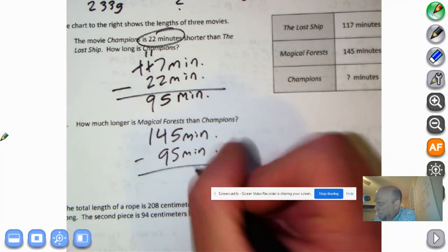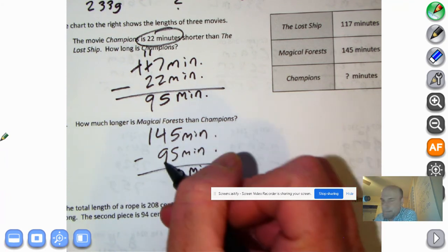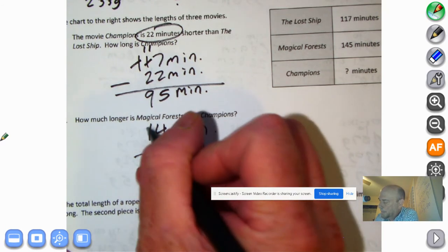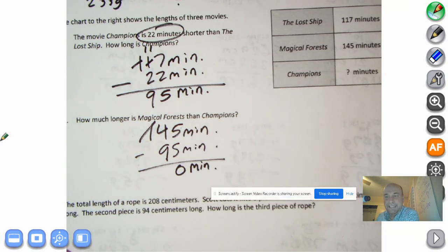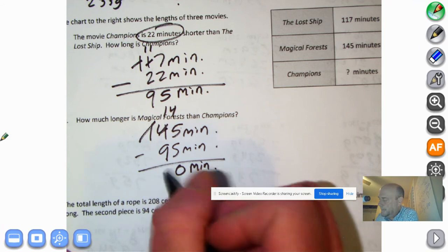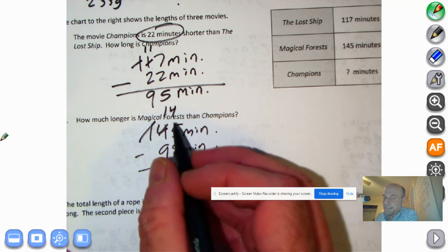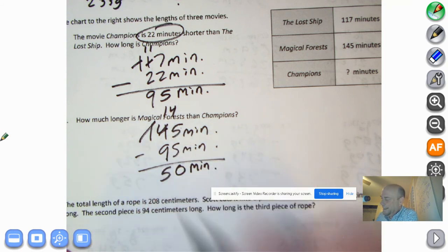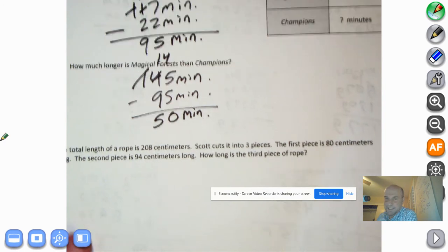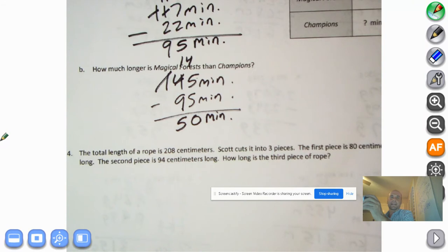So try on your own. And welcome back. We bring down our minutes. 5 minutes minus 5 minutes is 0 minutes. I can't take 90 minutes away from 40 minutes. Just will not happen. So I'm going to decompose 100 minutes. Make them 10 ten minutes. 10 ten minutes plus 4 ten minutes is 14 ten minutes, or 140 minutes. 14 ten minutes minus 9 ten minutes is 5. 50 minutes. That's how much longer the Magical Forest is than Champions.